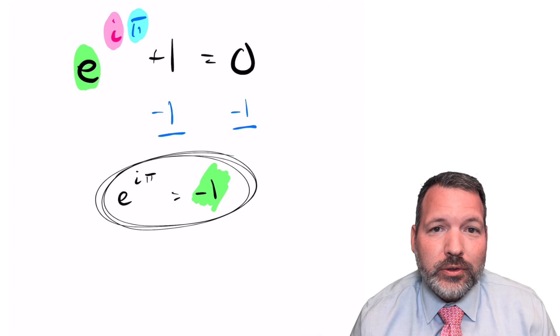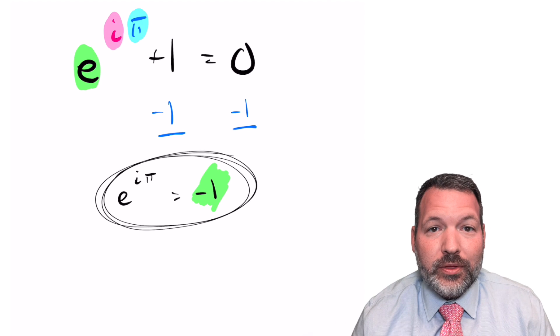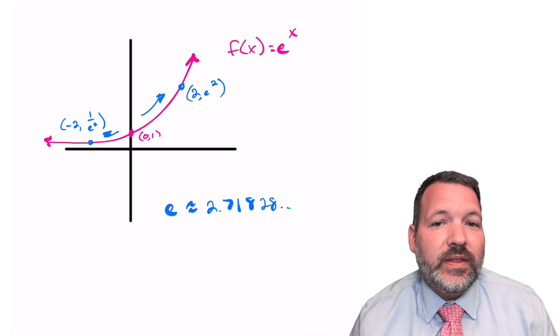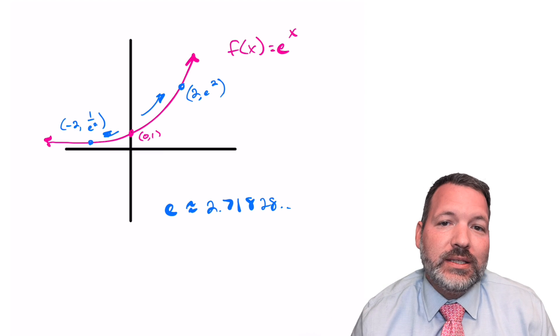If you repeatedly multiply by three, you're just going to get larger and larger numbers. If you repeatedly divide by three, you'll get smaller and smaller numbers. But these numbers remain positive the entire time.